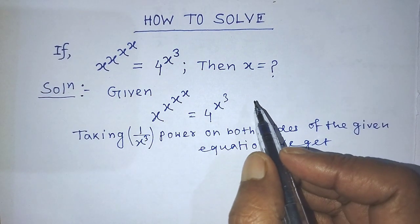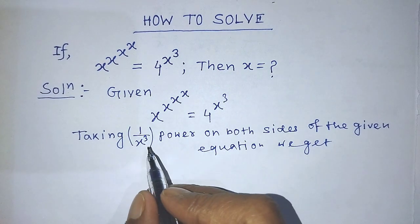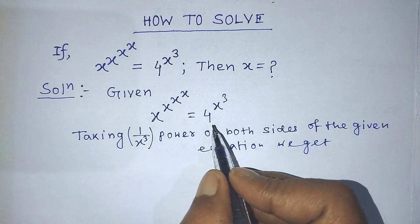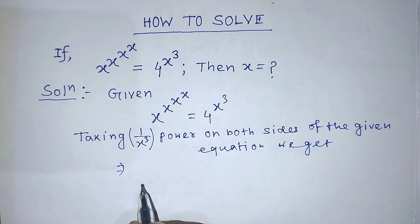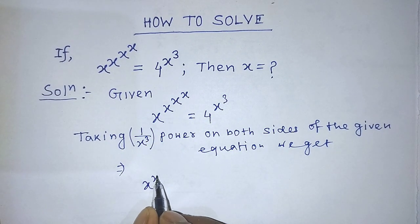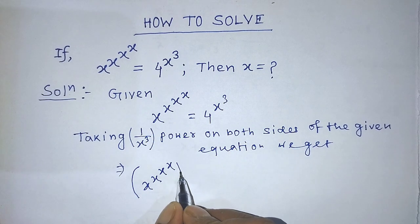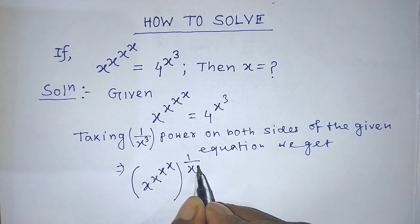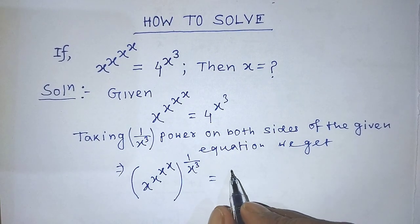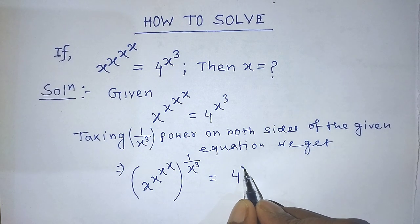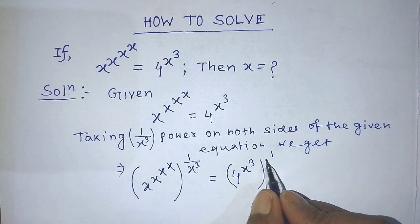To find the value of x from this algebraic equation, we have to take power 1 over x to the power 3 on both sides. Then on the left hand side we write x raised to the power of x to the power of x to the power of x, whole to the power 1 over x to the power 3, is equal to 4 raised to the power of x to the power 3, whole to the power of 1 over x to the power 3.